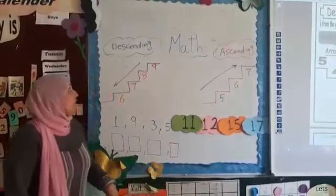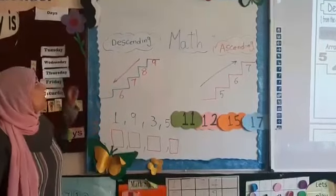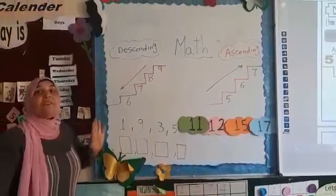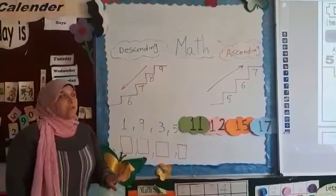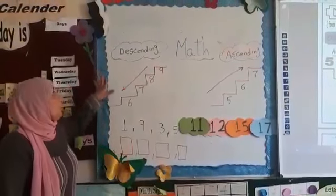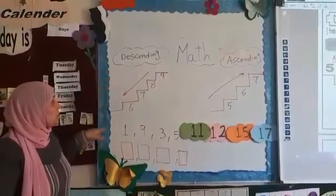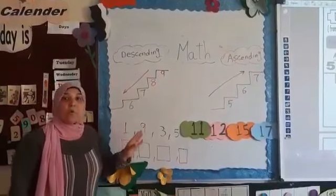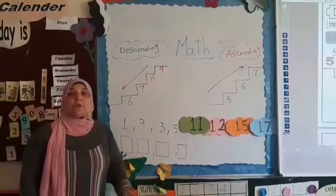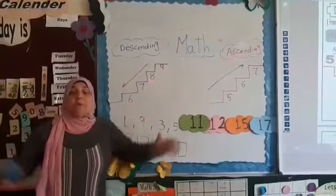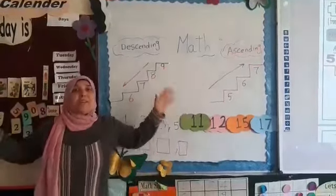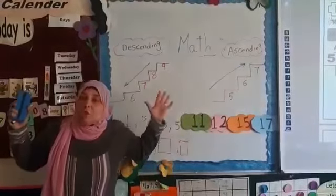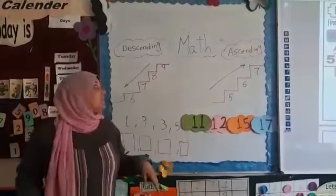Today we will talk about descending. It's a very easy lesson. What's the meaning of descending KG2? When we do descending, we start from the biggest. When we do descending, we start from — the biggest. Excellent.